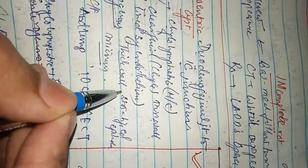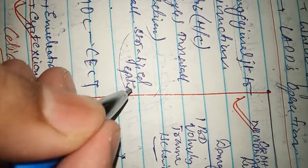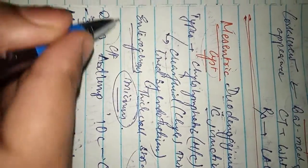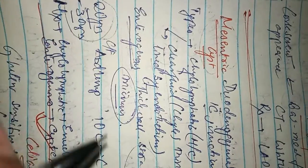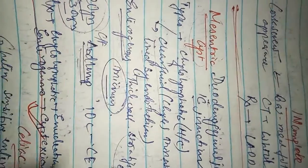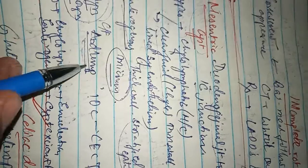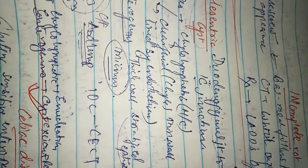The enterogenous type has a thick wall with stratified epithelium and contains mucin with blood vessels. It is mainly seen in the age group of 20 to 30 years, and the patient clinically complains of an abdominal lump.